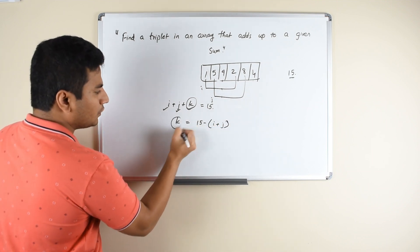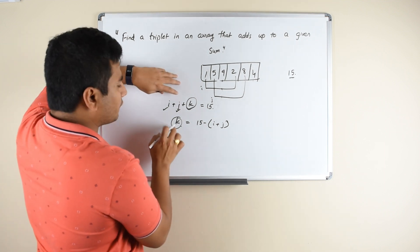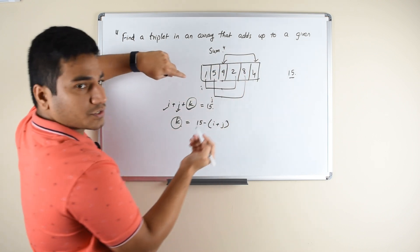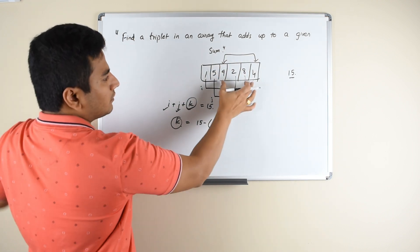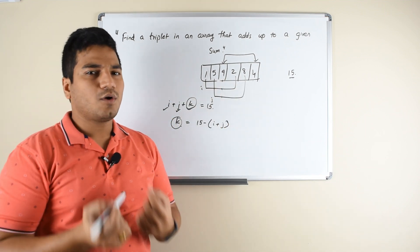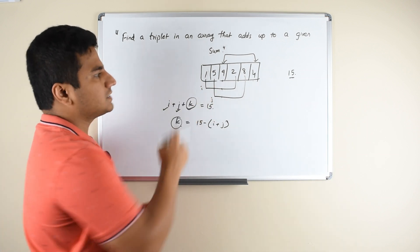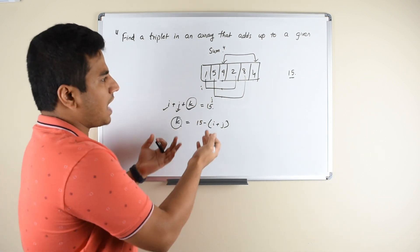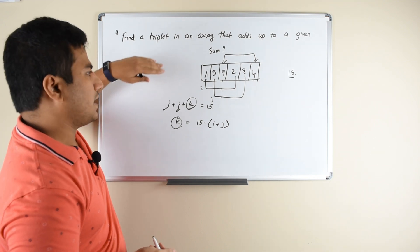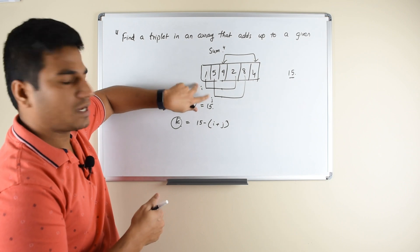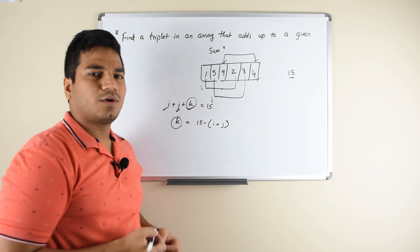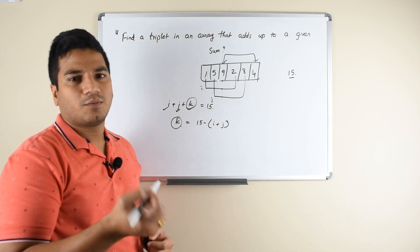Right. So you know the K element and all you have to do is you have to find this K in the array between here and here, at least for the first iteration. So to search this element what we can do is we can do a binary search. But if you want to do a binary search, you cannot do binary search as is on this array. You have to sort the array first. So our approach is based on sorting the array first and then having the two loops as of the previous approach, and for the third element we are doing the binary search. So let us take a look at the code for this approach.